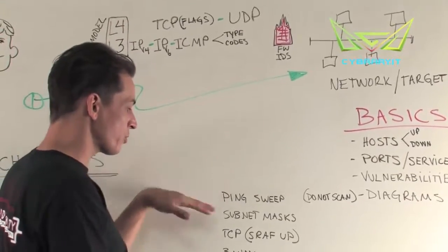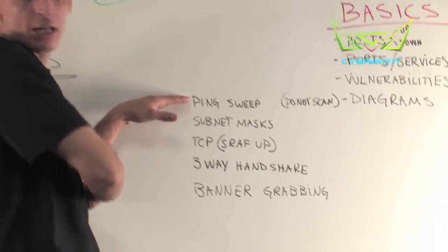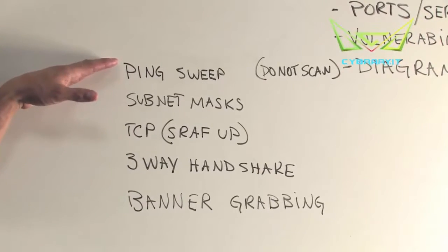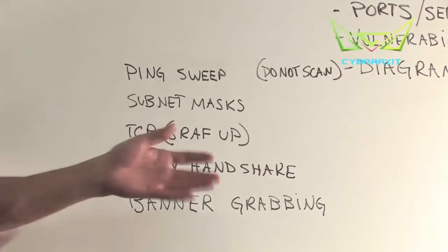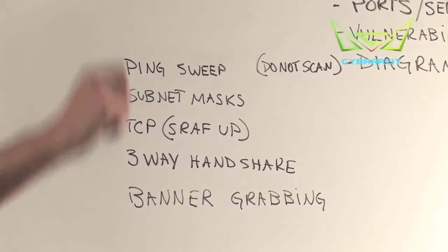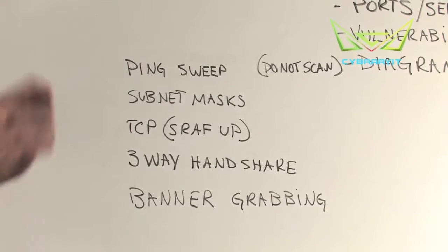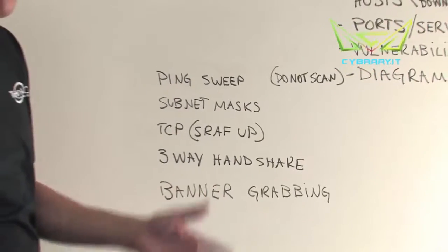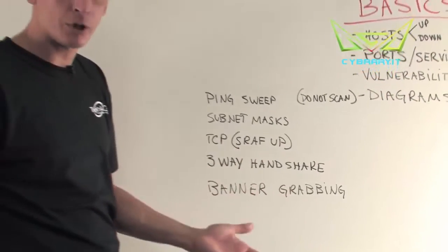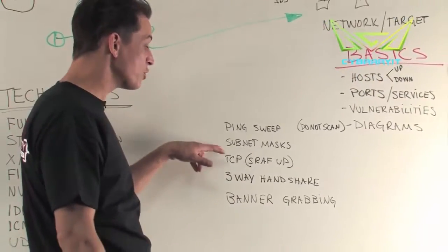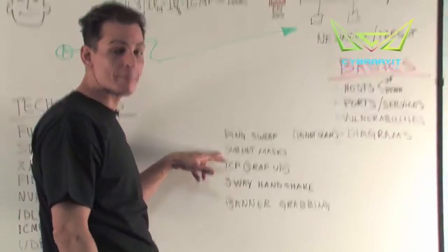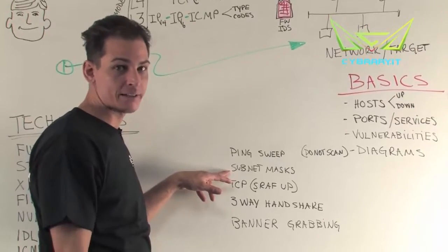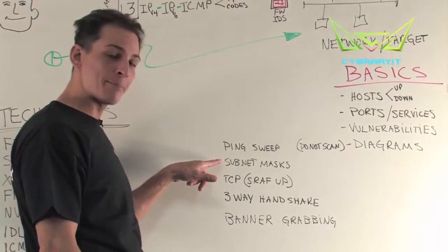One basic technique is a ping sweep, where you grab a whole network block or range of IP addresses and knock on everyone's door — are you home? It's like walking down the street checking each address. You can use the subnet mask or CIDR notation to facilitate that.